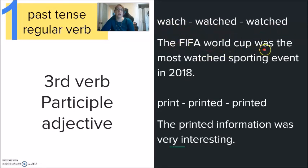When we come to using this as the adjective, we are thinking about again that third verb. So watch, watched, watched. We see the FIFA World Cup was the most watched sporting event in 2018. Definitely here, watch is not the main verb of the sentence. The main verb of the sentence is was. For example, the FIFA World Cup was interesting. The FIFA World Cup was boring.